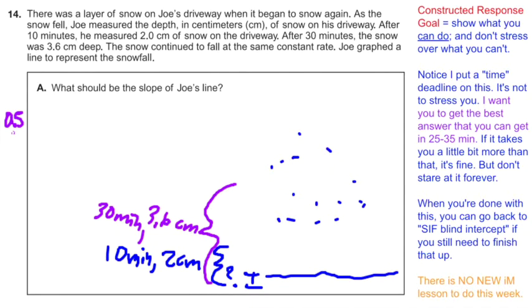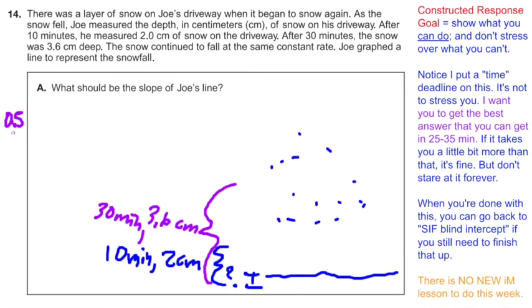One constructive response point is worth 10 multiple choice points. So big deal if you can get just one, obviously bigger deal if we can get more. This is a classic constructive response. They love to ask these. They'll give you two changing things.